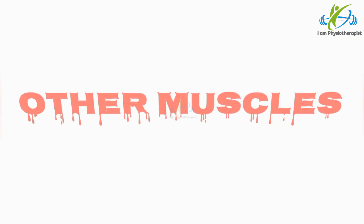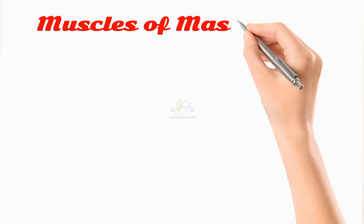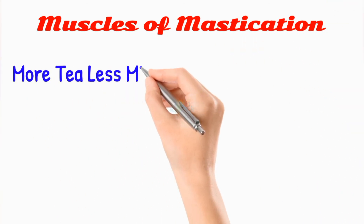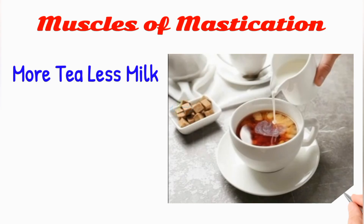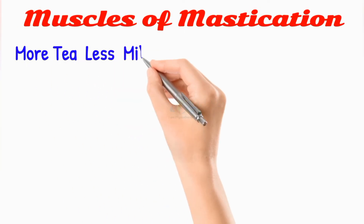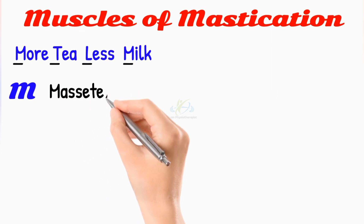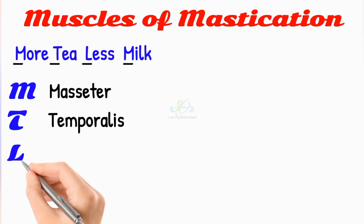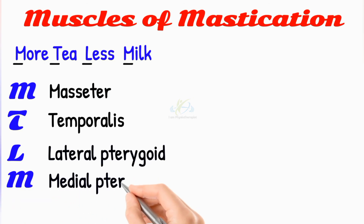Other facial muscles include the muscles of mastication. The mnemonic for mastication muscles is 'More tea less milk.' M stands for masseter, T stands for temporalis, L stands for lateral pterygoid, and M stands for medial pterygoid.